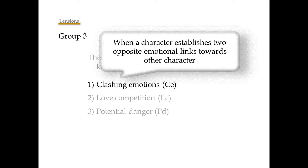The first is clashing emotions. Clashing emotions are triggered when a character establishes two opposite emotional links towards other characters. That is, character A hates and loves at the same time character B.